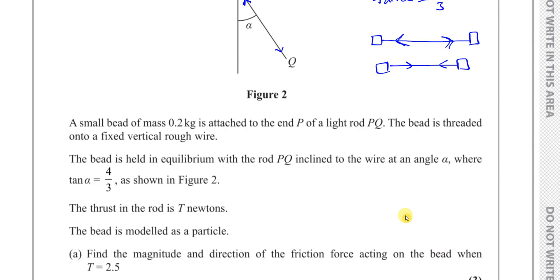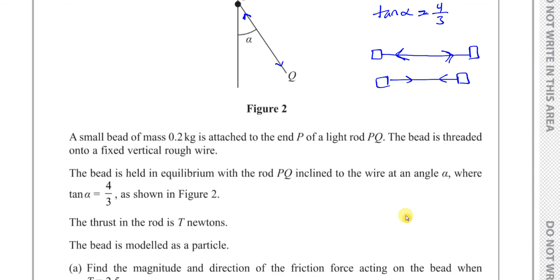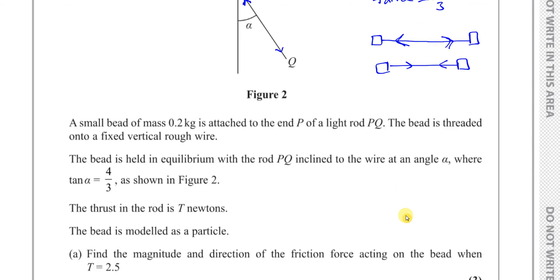The bead is modelled as a particle. Find the magnitude and direction of the friction force acting on the bead when T equals 2.5 newtons.